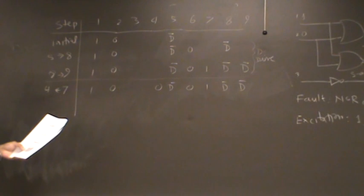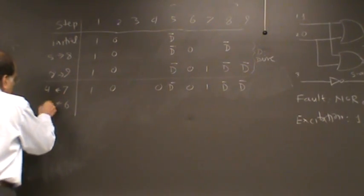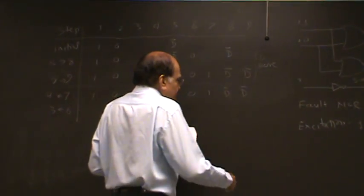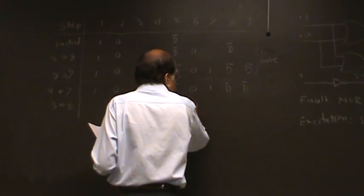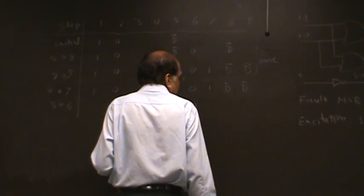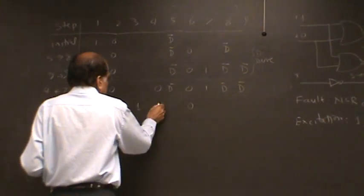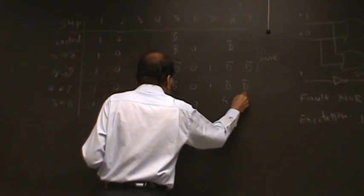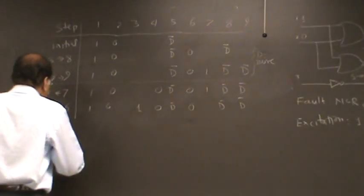And now let us justify the value on line six by putting something on line three. This is easy. Line six is a zero, and we can easily justify by making this a one.